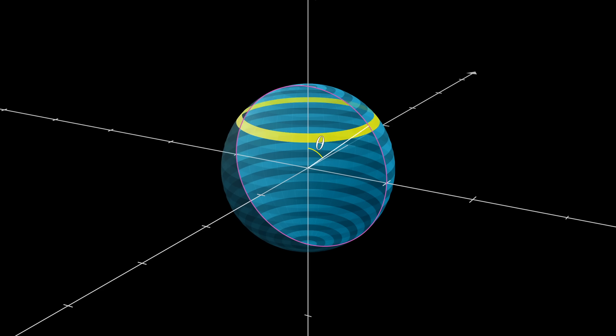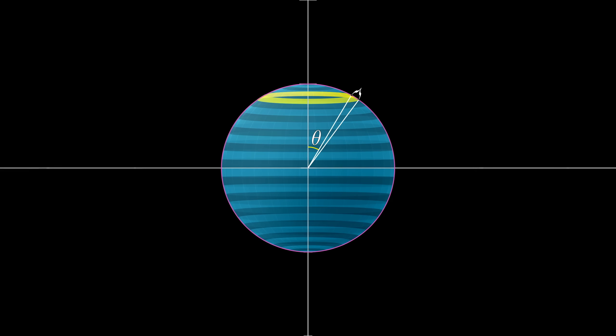And let's call the change in the angle from one ring to the next dθ, which means the thickness of those rings will be the radius r times dθ.